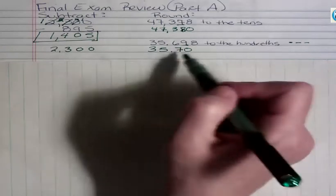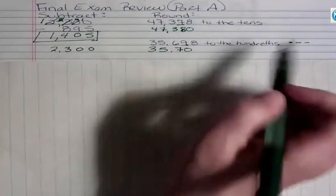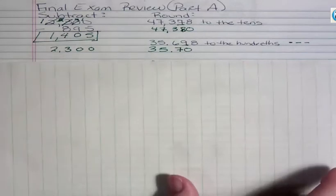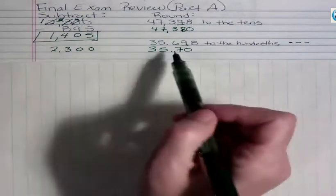But 69 would round up to 70, and even though I could just put 35.7, I need to put the 70 because I need to show that to the 100s place. Otherwise, I would drop that 0. I want to make sure, though, I go out 2 places.